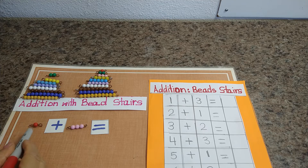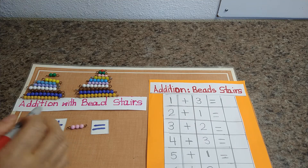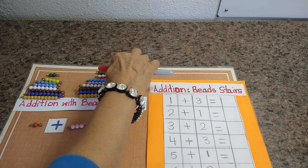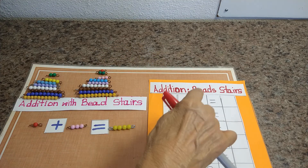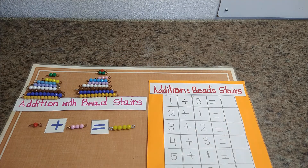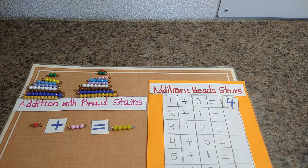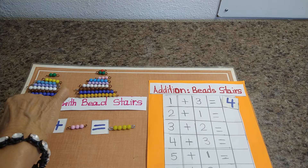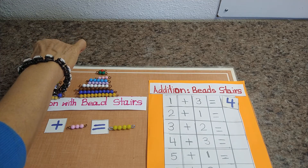Let's do that. One, two, three, four. Our answer is four. One plus three is four. Let's put them back and do the next one.